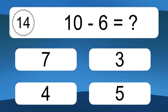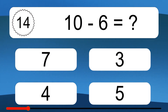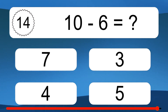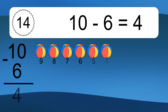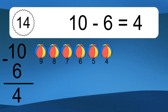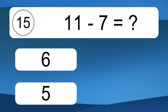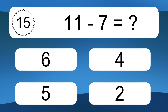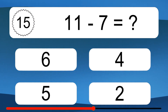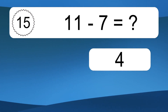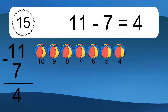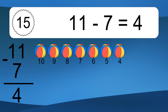10 minus 6 equals what? 10 minus 6 equals 4. Let's count it. 9, 8, 7, 6, 5, 4. 11 minus 7 equals what? 11 minus 7 equals 4. Let's count it. 10, 9, 8, 7, 6, 5, 4.